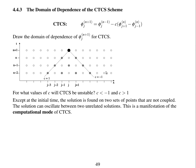Another thing to notice about CTCS is that, apart from the initial time, depending on how you initialize CTCS, the solution is found on two sets of points that are not coupled. These points are never dependent on the points that are not filled in, so you could have two completely different solutions — one at the white points and one at the grey points — which never interact with each other. The solution can oscillate between two unrelated solutions, which is a manifestation of the computational mode of CTCS.